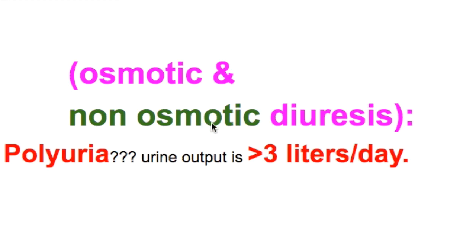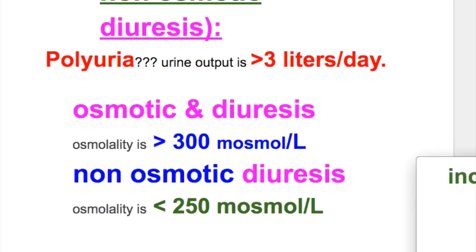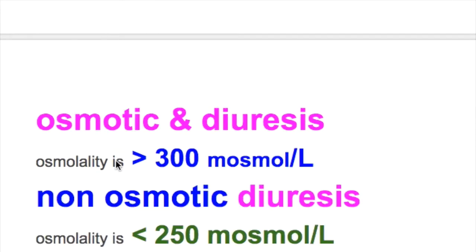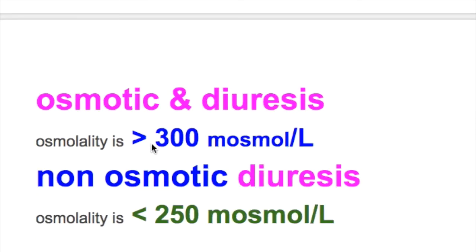Osmotic and non-osmotic diuresis. Polyuria is when urine output is more than 3 liters a day. In osmotic diuresis, the osmolality of urine is more than 300 milliosmols per liter, and in non-osmotic diuresis it is less than 250 milliosmols per liter.